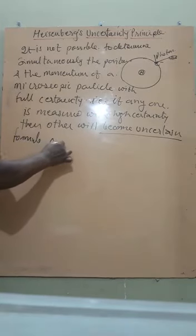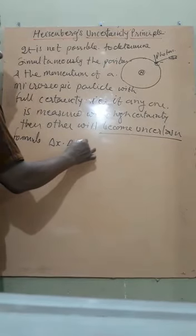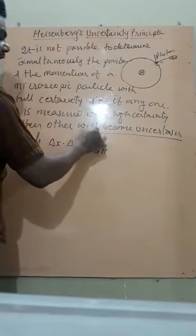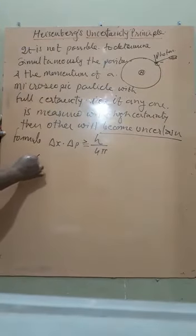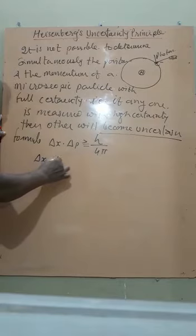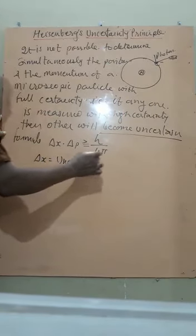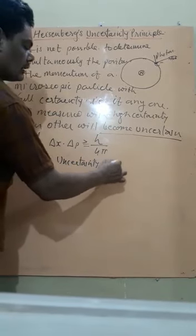Therefore, del X multiplied by del P is equal to or greater than h upon 4π, where h is Planck's constant. Here, del X is called uncertainty, uncertainty in the position.